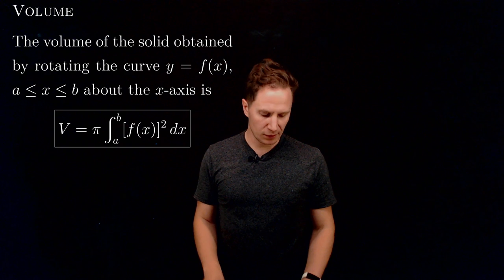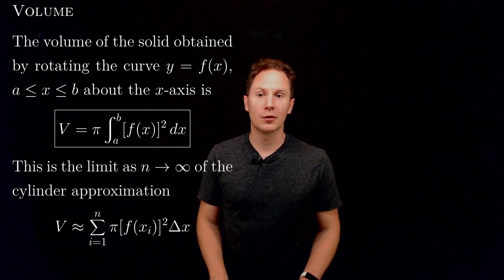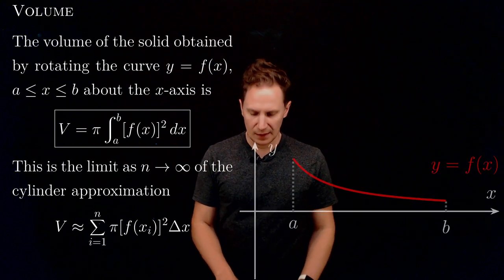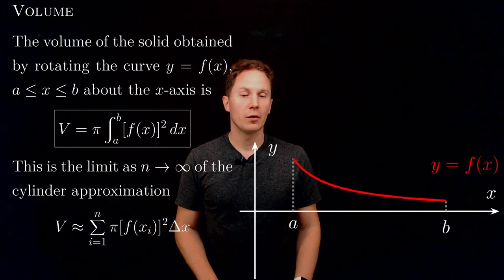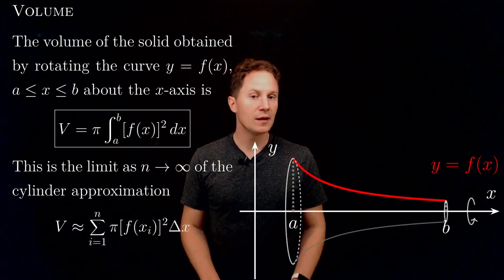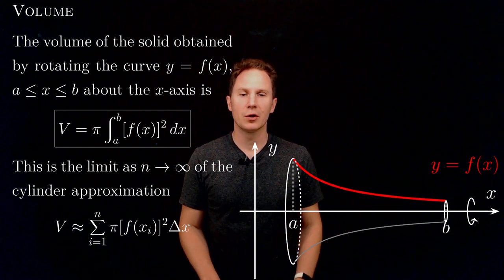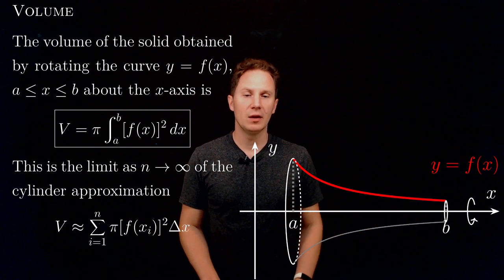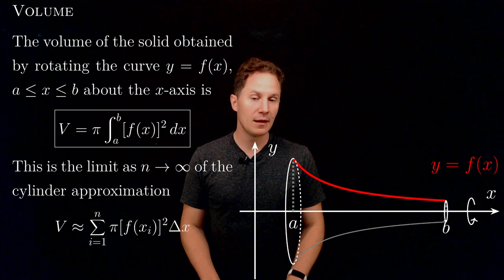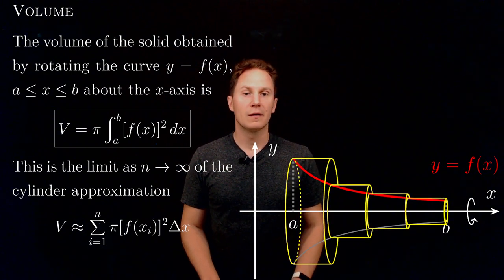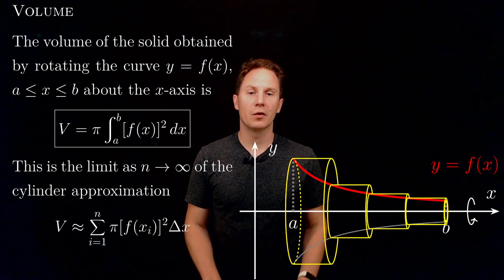So this integral formula is obtained from the cylinder approximation to the volume, which looks as follows. We take the graph of the function f over the interval ab, rotate it about the x-axis to get this solid of revolution, and then we subdivide the interval ab into small subintervals.